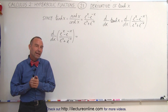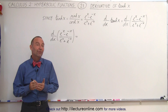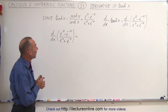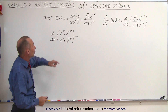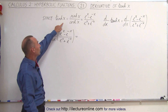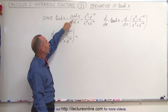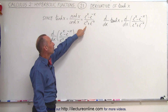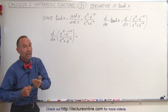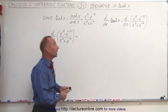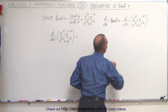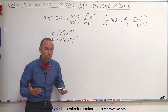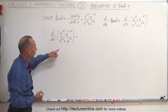Welcome to our lecture online. Now we're ready to find the derivative of the hyperbolic tangent of x. We know that tanh(x) is equal to the ratio of the hyperbolic sine to the hyperbolic cosine, which means it can be written in exponential form. Taking the derivative of this expression means it becomes a quotient, so we're going to use the quotient rule.